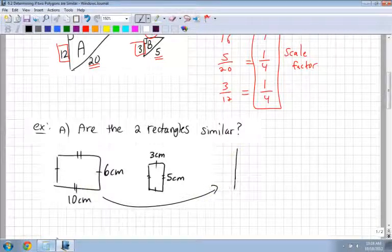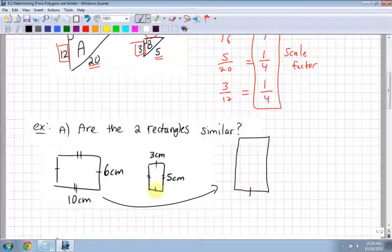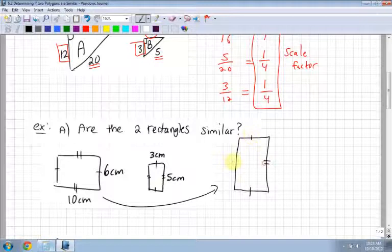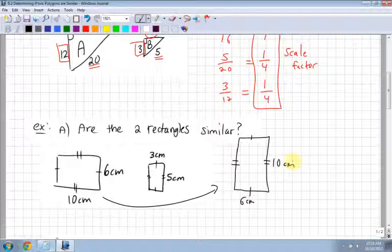We'll draw it over here, so that it's more similar to this one over here. So I'm going to put the single tick on the bottom, just like this one, and the double ticks on the side. The single tick corresponds to 6 centimeters. Good. And the double tick corresponds to 10 centimeters. You don't have to do this, but it is helpful to see.